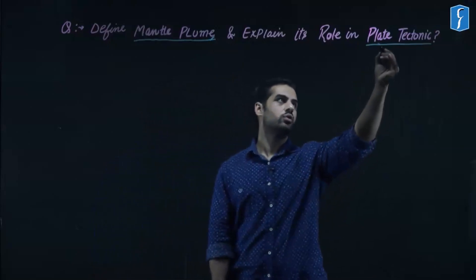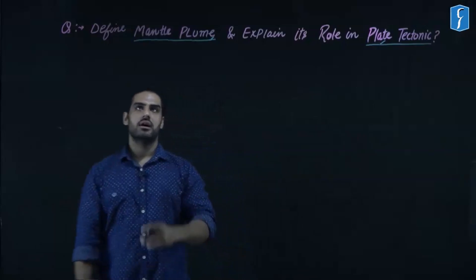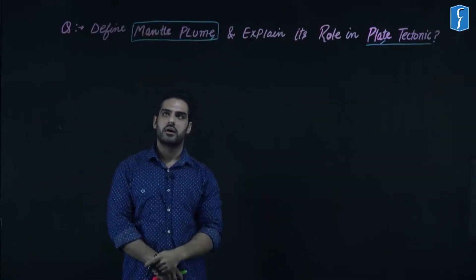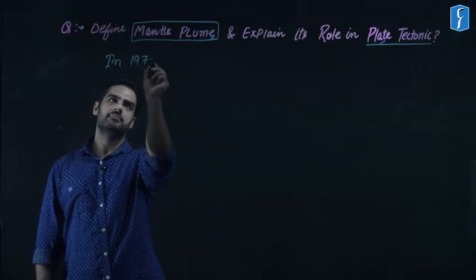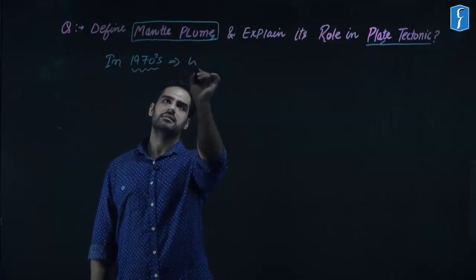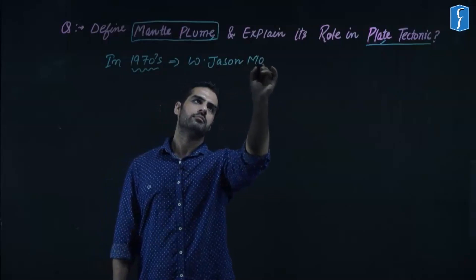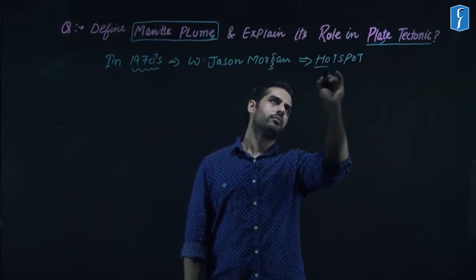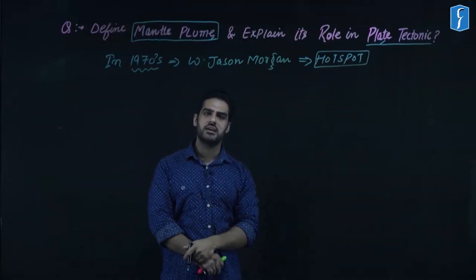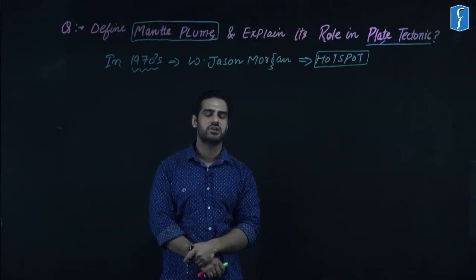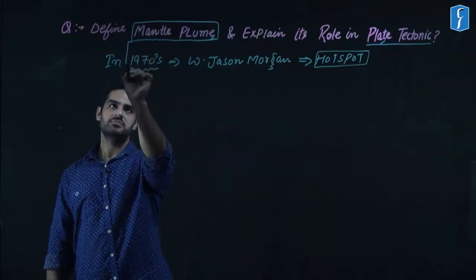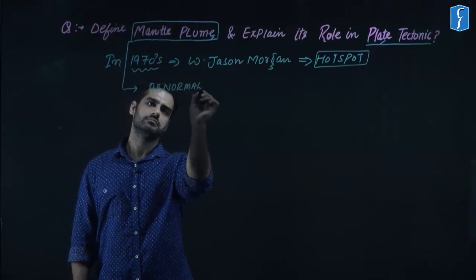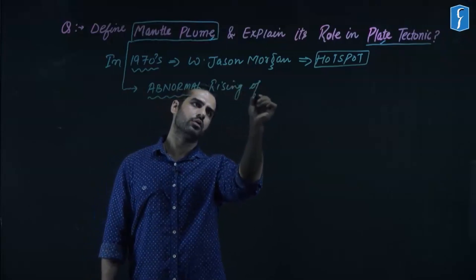The word itself suggests there is some rising material from the mantle. In 1970, a hypothetical concept was given by W. Jason Morgan, known as hotspots. A hotspot is defined as any region on the Earth's surface which has direct connectivity to the magma chamber.